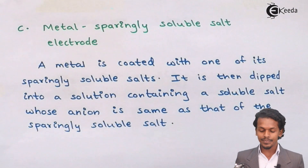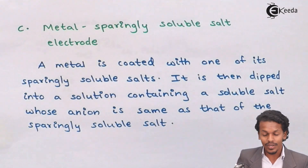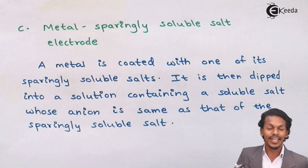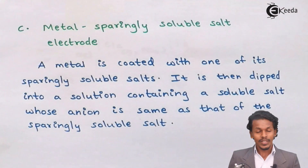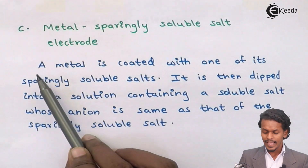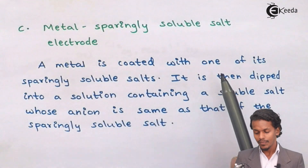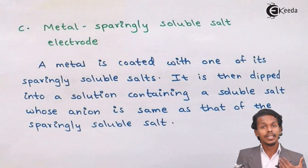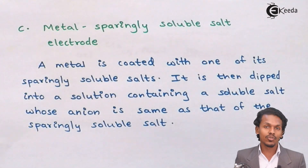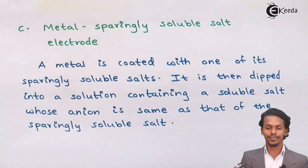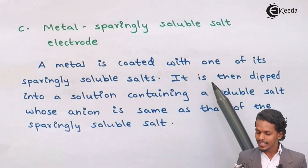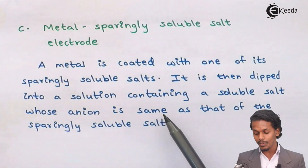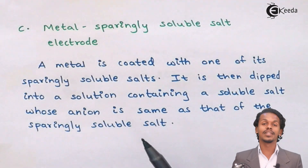The third type is the metal-sparingly soluble salt electrode. In this electrode, a metal is coated with one of its sparingly soluble salts — meaning a salt that does not dissolve too much in solution. It is then dipped into a solution containing a soluble salt whose anion is the same as that of the sparingly soluble salt.